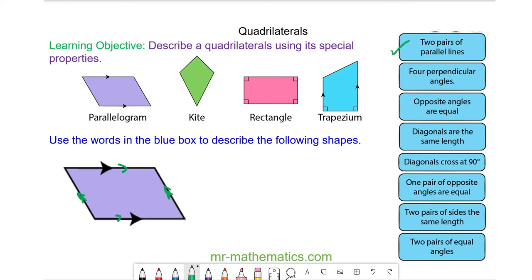The opposite angles are equal. So this angle is equal to this angle and this angle is equal to this angle. Also it has two pairs of equal and opposite sides. So this side is equal to this side and this side is equal to this side. And as we mentioned it has two pairs of equal angles.